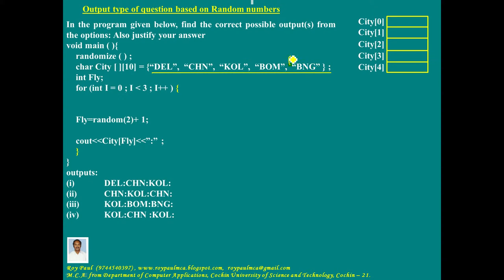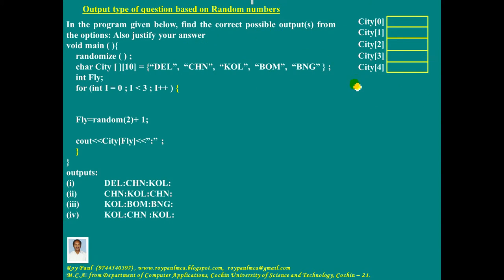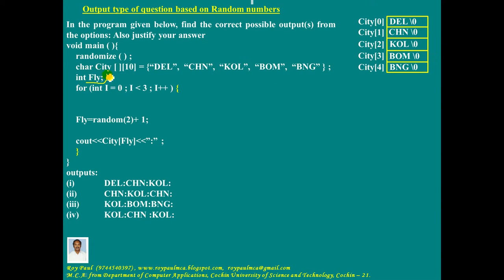This initial value comes here. city[0] contains the first initial value DEL. city[1] contains the second initial value CHN. city[2] contains the third initial value KOL. city[3] contains BOM. And city[4] contains the last initial value BNG. So memory is allocated for this two-dimensional array and the initial values are inserted. fly is an integer variable.